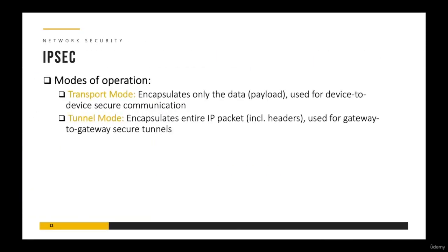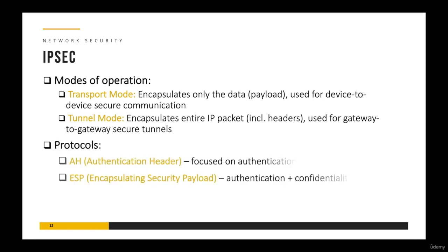IPSec offers two modes of operation. In transport mode, we encapsulate only the data or payload, and this is used for device-to-device communication. In tunnel mode, the entire packet is encrypted — not only the data but the headers as well — and this is mostly used for gateway-to-gateway communication. IPSec uses two different types of protocols: the Authentication Header, which focuses on authentication, and the Encapsulating Security Payload, which focuses on both authentication and confidentiality.